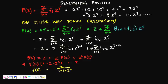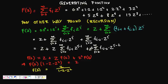Since F(0)=0, we have 0·z^0. F(1)=1 gives 1·z. F(2)=1 gives 1·z². F(3)=F(2)+F(1)=2 gives 2·z³. F(4)=3 gives 3·z⁴. F(5)=5 gives 5·z⁵, and so on. We get this infinite polynomial series.